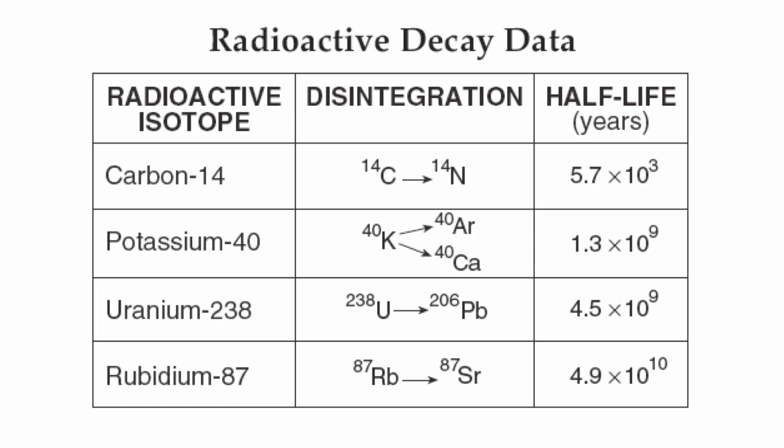So the first one that we're going to focus on is carbon-14. Remember, this is going to be a very important isotope because it's found in organic material. Carbon-14, C-14, changes into nitrogen-14, or N-14. And it takes 5,700 years for carbon-14 to change into nitrogen-14.